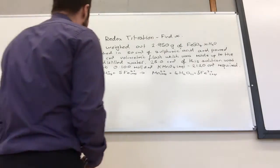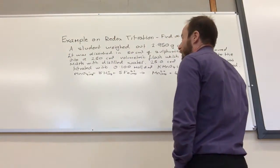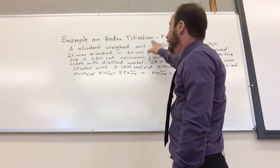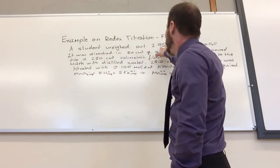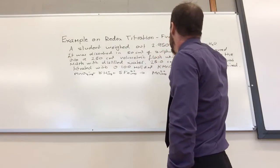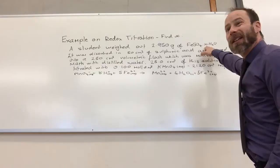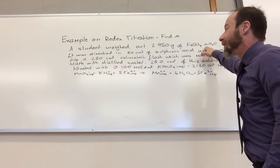So this is a kind of standard exam question on redox titration. It wants me to find X. A student weighed out 2.950 grams of unhydrated iron(II) salt. We need to find this here. How many water crystallizations did it have?